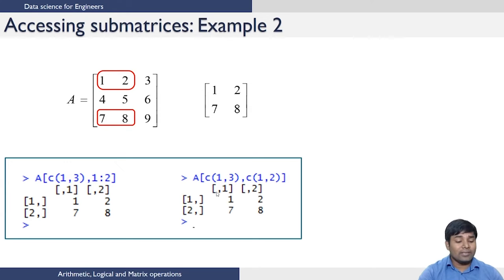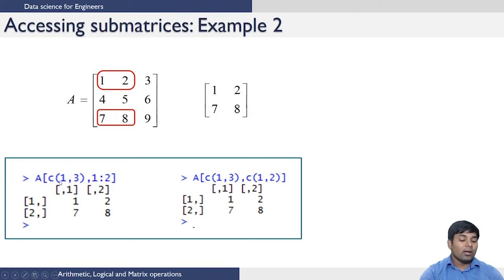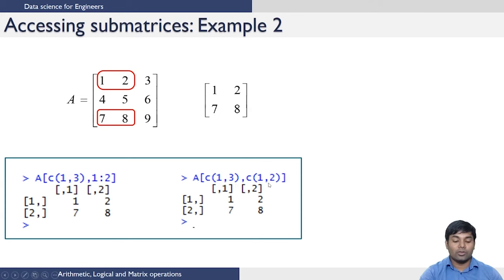Here is another example of accessing sub-matrices. If you want to access the elements 1, 2 and 7, 8 as a sub-matrix, you need rows 1 and 3 and columns 1 and 2. You specify the rows as rows 1 and 3, and columns 1 and 2, to get the desired sub-matrix. You can also use the concatenation operator for both arguments, using c(1,3) for rows and c(1,2) for columns, which gives the desired result.